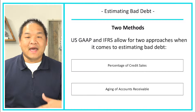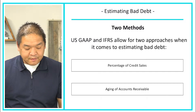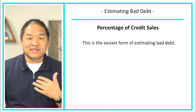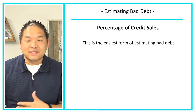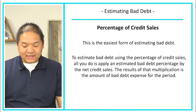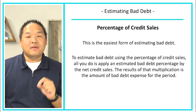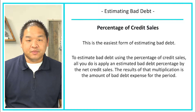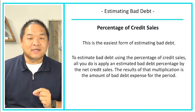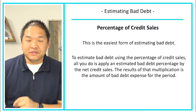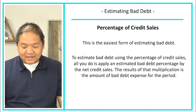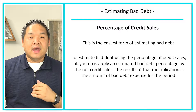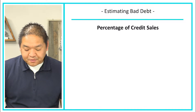The percentage of credit sales is the easiest form of estimating bad debt. To estimate bad debt using this method, all you have to do is apply an estimated bad debt percentage to the amount of net credit sales. That multiplication gives you your bad debt expense and your allowance for bad debt. Once you calculate it, you're done — you can make the journal entry and move on.